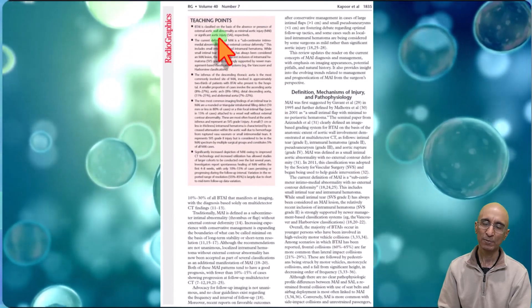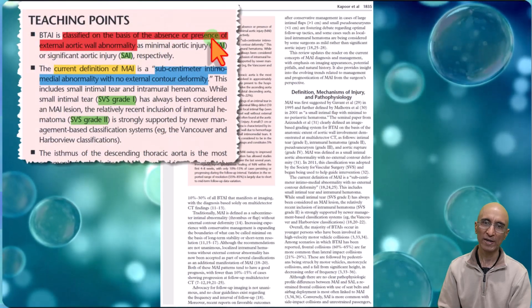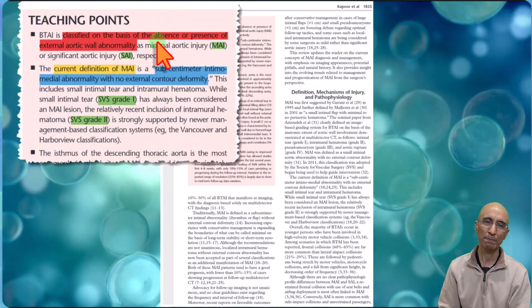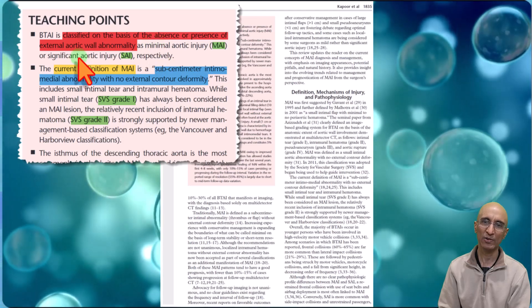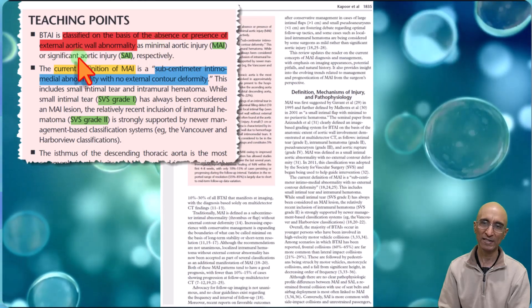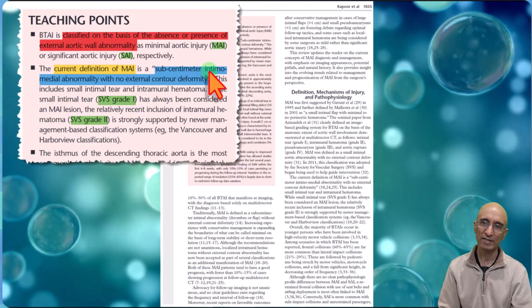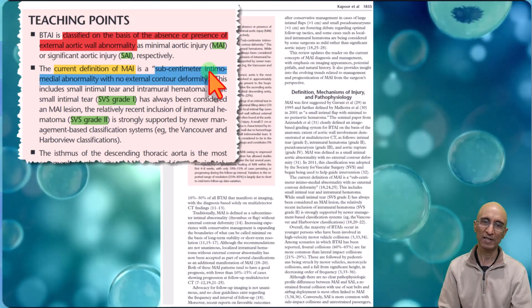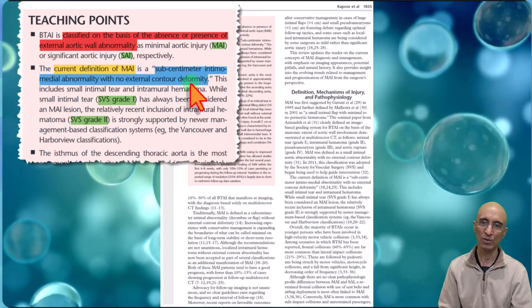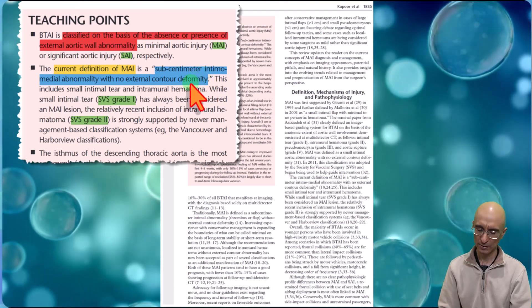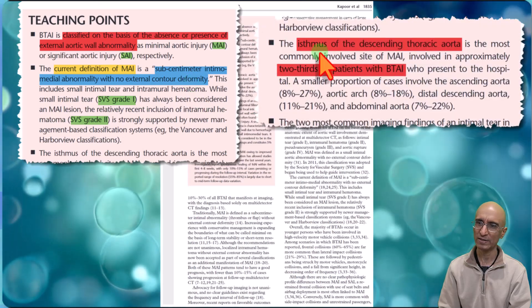A few teaching points from this case. In terms of blunt traumatic aortic injury, it is classified based on the presence or absence of external aortic wall abnormality. Minimal aortic injury is defined by sub-centimeter intimo-medial abnormality with no external contour abnormality. This includes both SVS grade 1 and SVS grade 2 injuries.